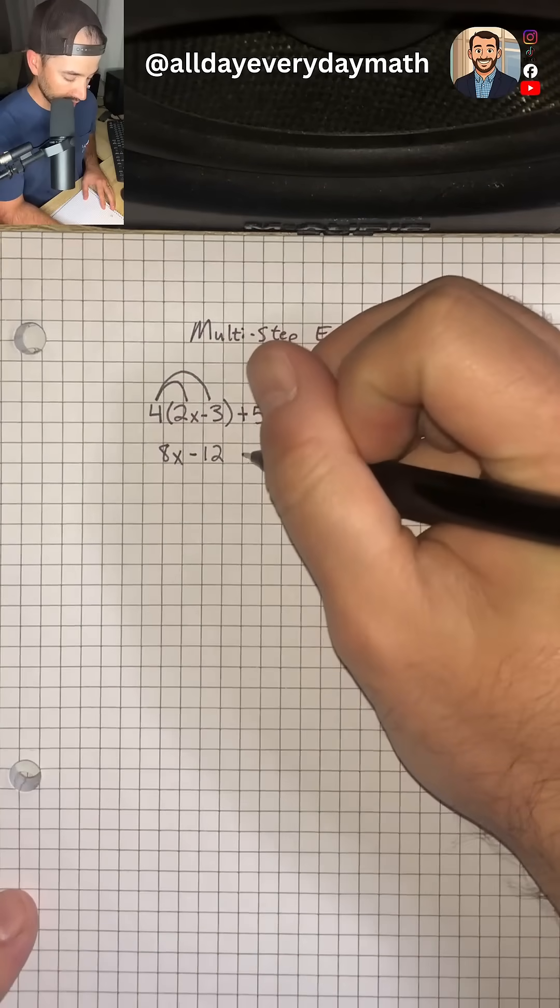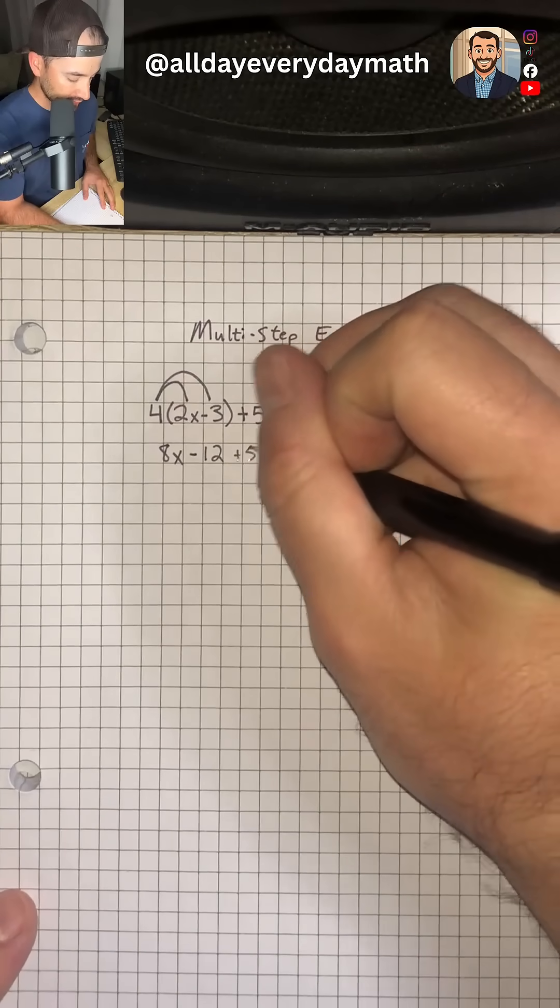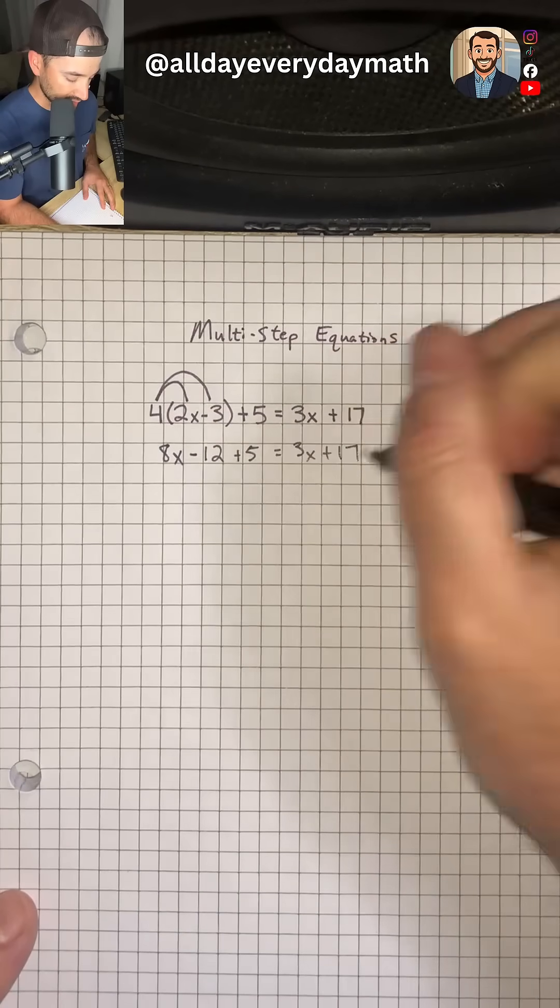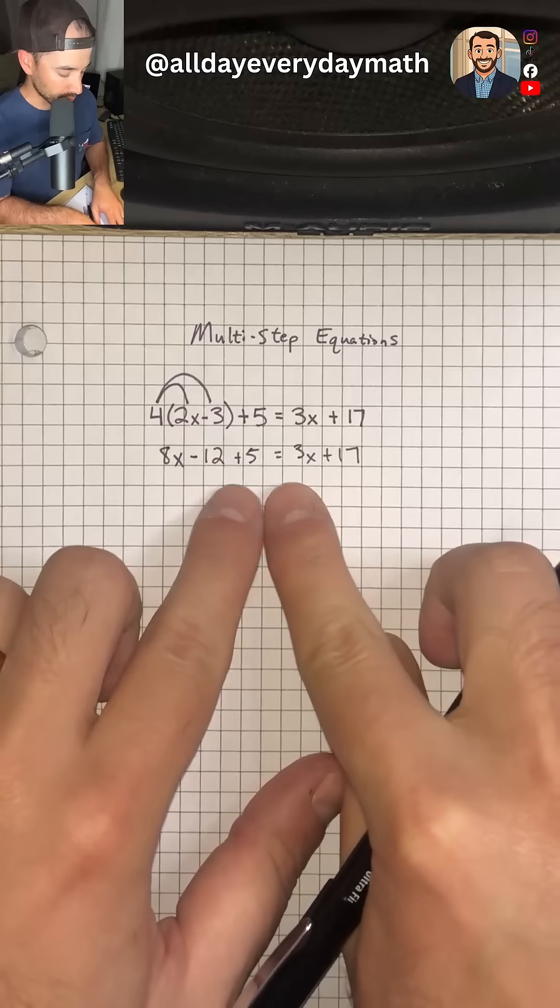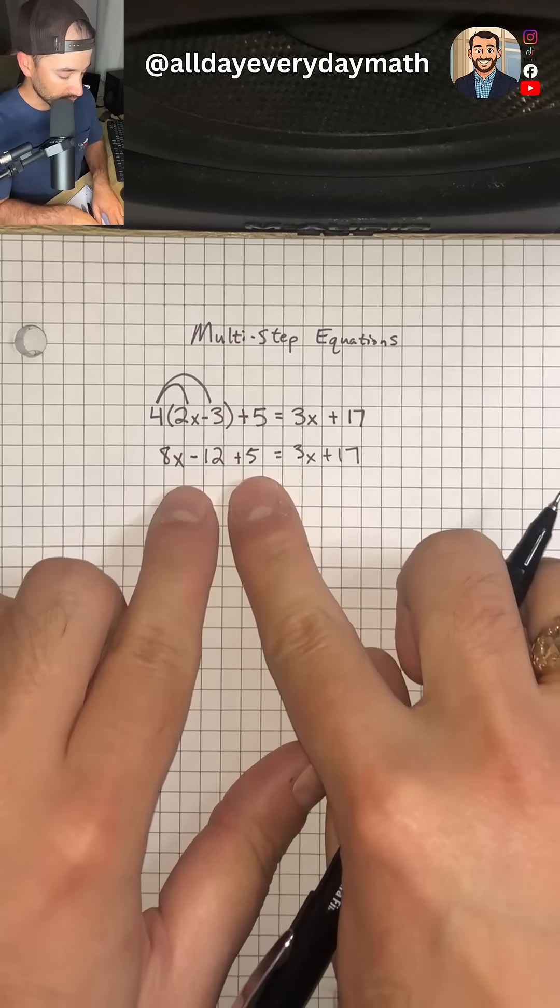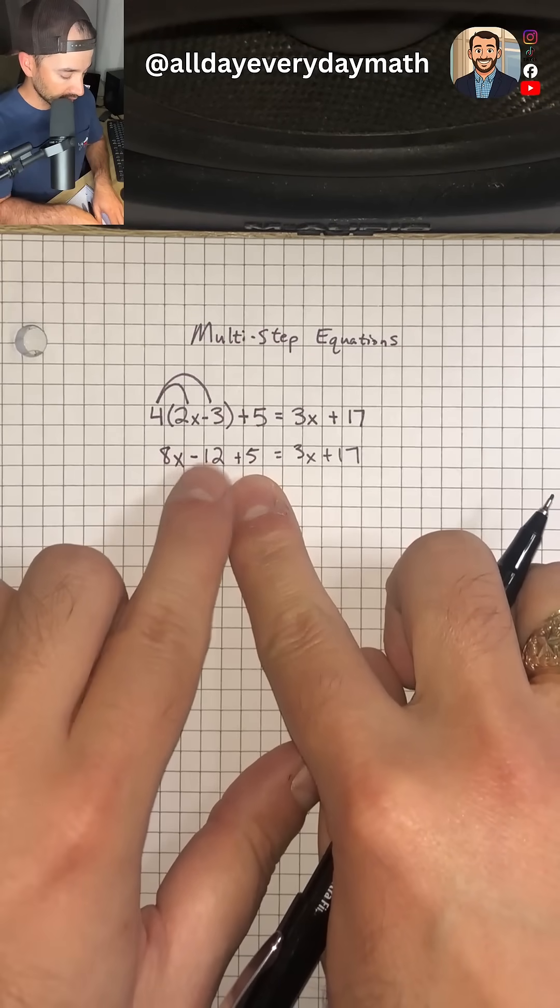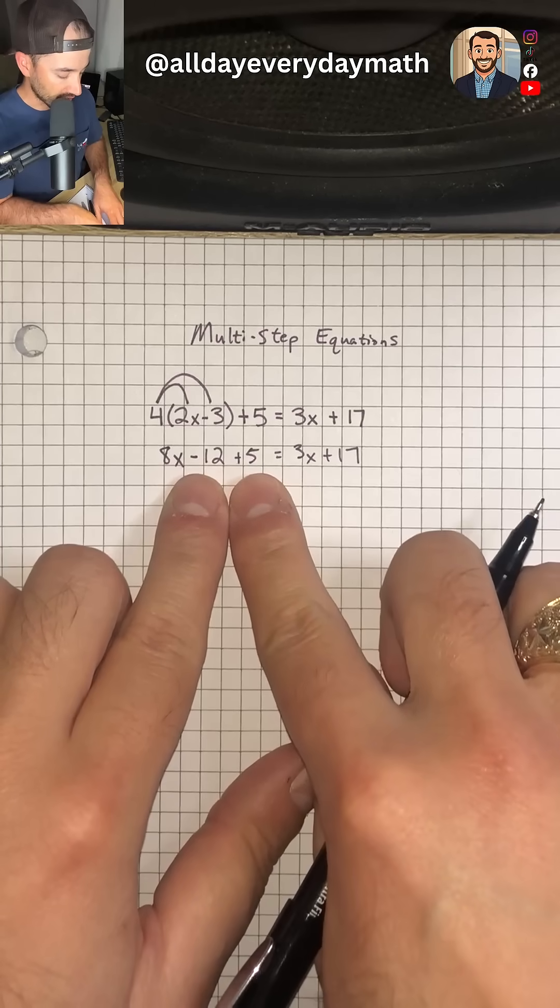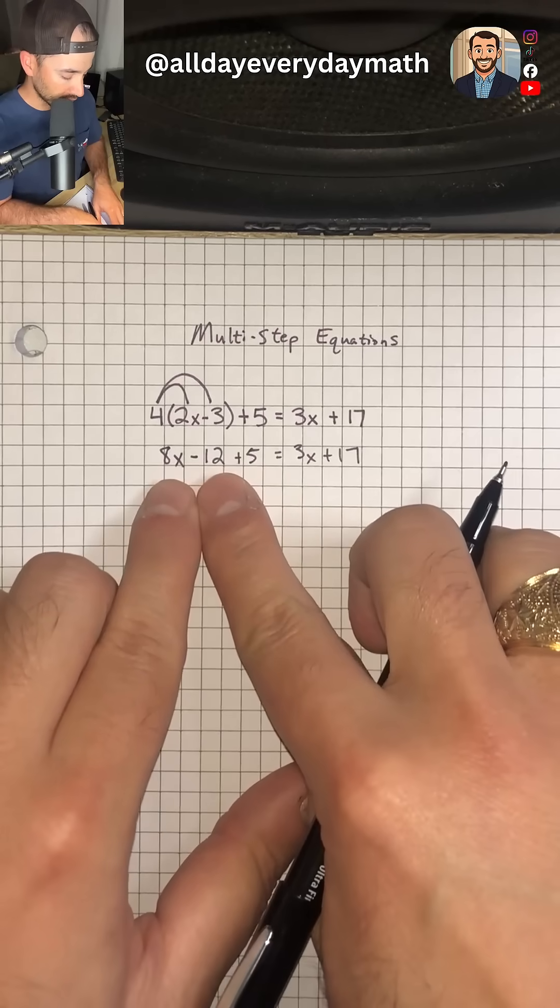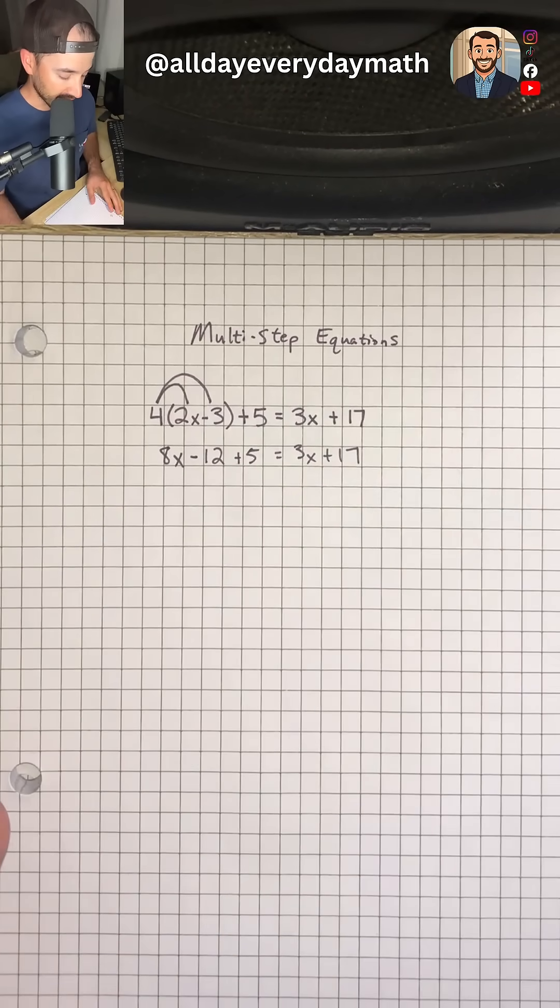Then we're going to bring down the rest. So plus 5 is equal to 3x plus 17. So now I'm looking at both sides of the equal sign. Do we have any like terms that we can combine? And we do. On the left side, we have a negative 12 and a plus 5 or a positive 5. And so we can combine those because negative 12 plus 5 is negative 7.